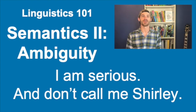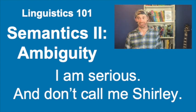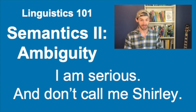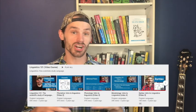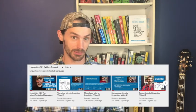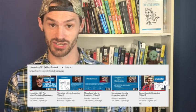Hey everyone, this video is about ambiguity in linguistics, which is when we say things that can have more than one meaning. I'm Aaron from Finkton Languages, and just so you know, this video is part of a larger series about the basics of linguistics. To see other videos about the science of language, you can check out the link up here or in the description below.